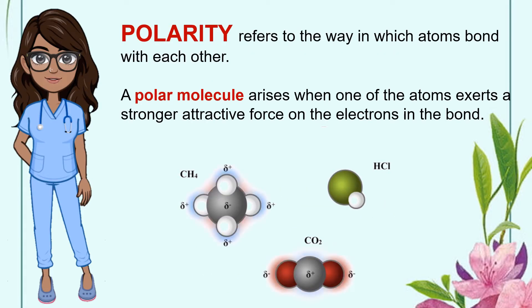Polarity refers to the way in which atoms bond with each other. When atoms come together in chemical bonding, they share electrons. A polar molecule arises when one of the atoms exerts a stronger attractive force on the electrons in the bond. The electrons get drawn more towards that atom so that the molecule exhibits a slight charge imbalance.